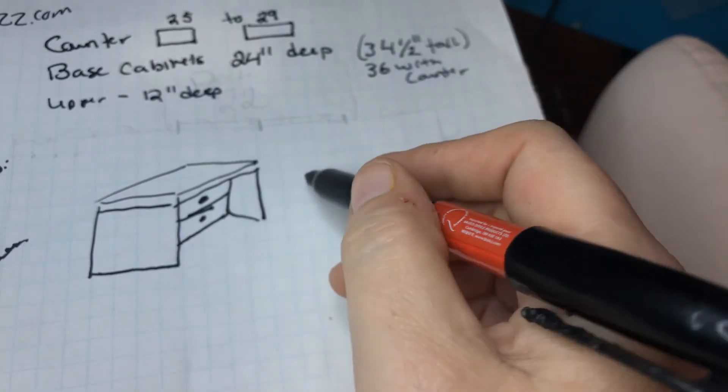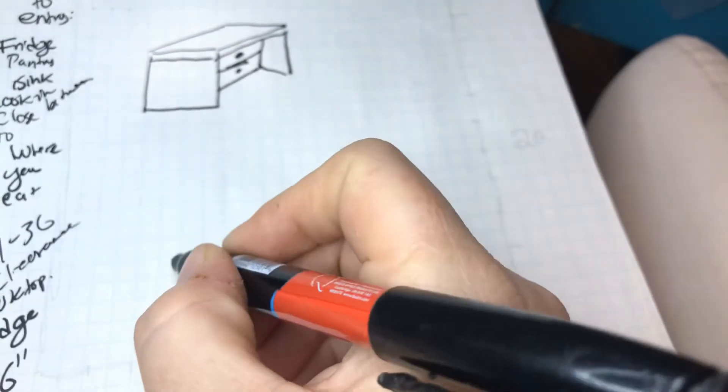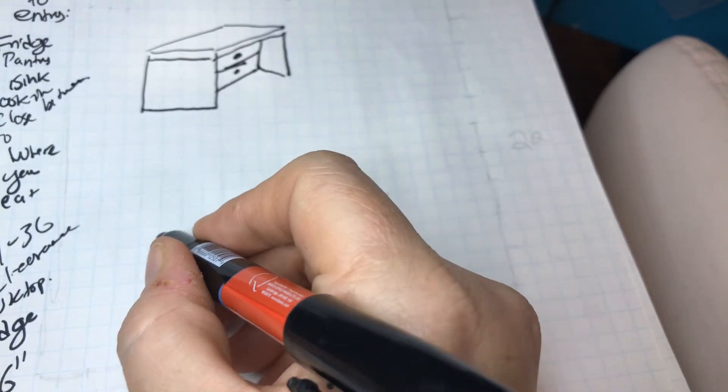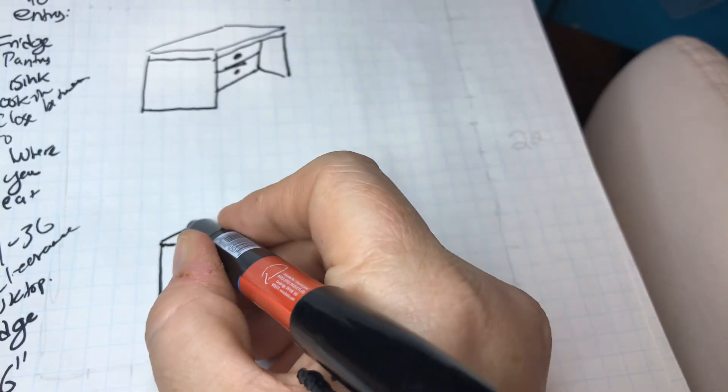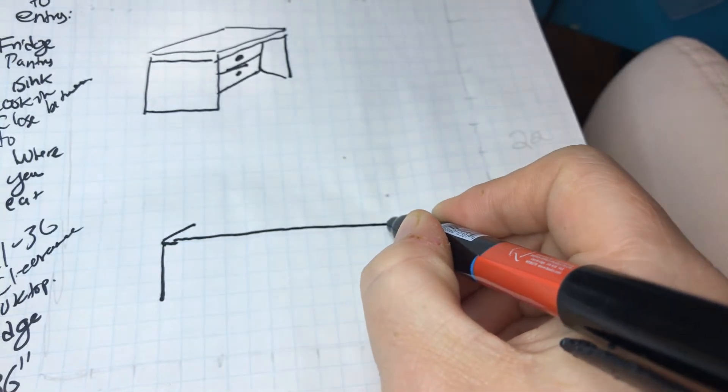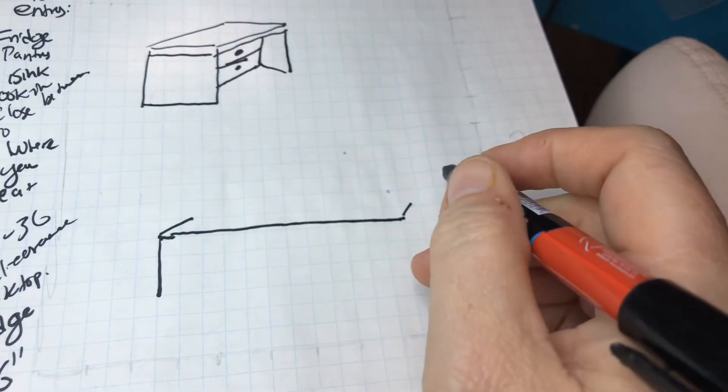So instead of having in a traditional kitchen, you've got your countertops say is yay high 36 inches. There are usually two, but I'm just, this is just a visual reference. So most countertops are 24 inches deep plus a little bit.